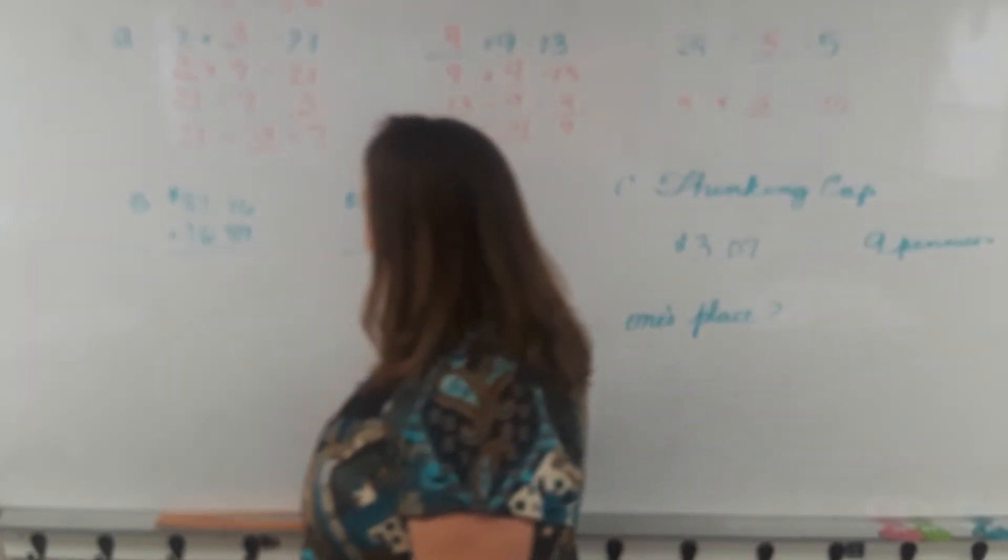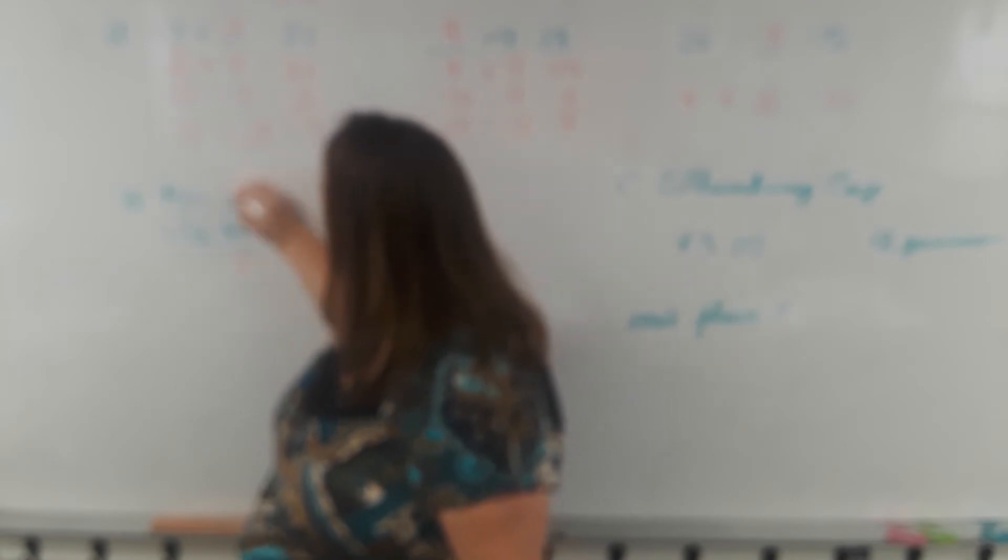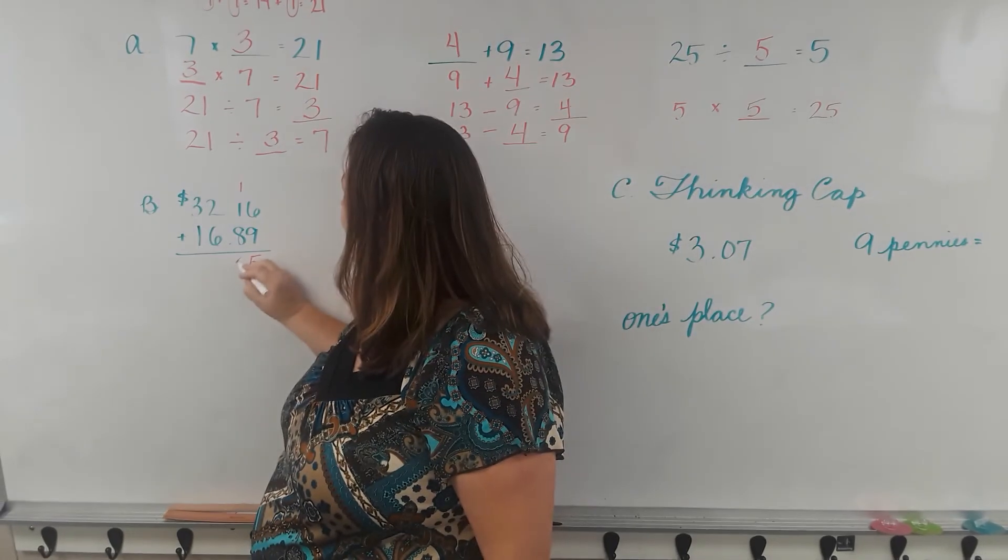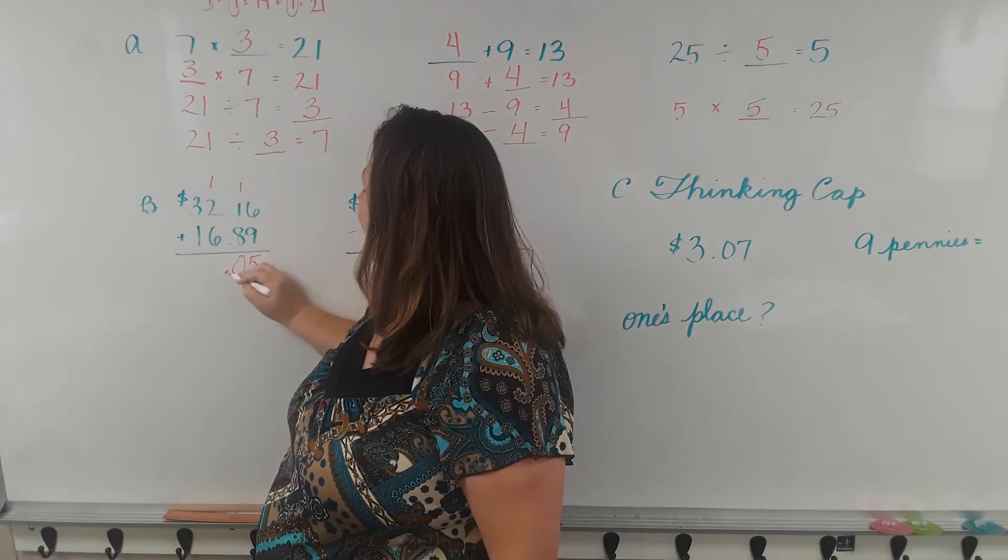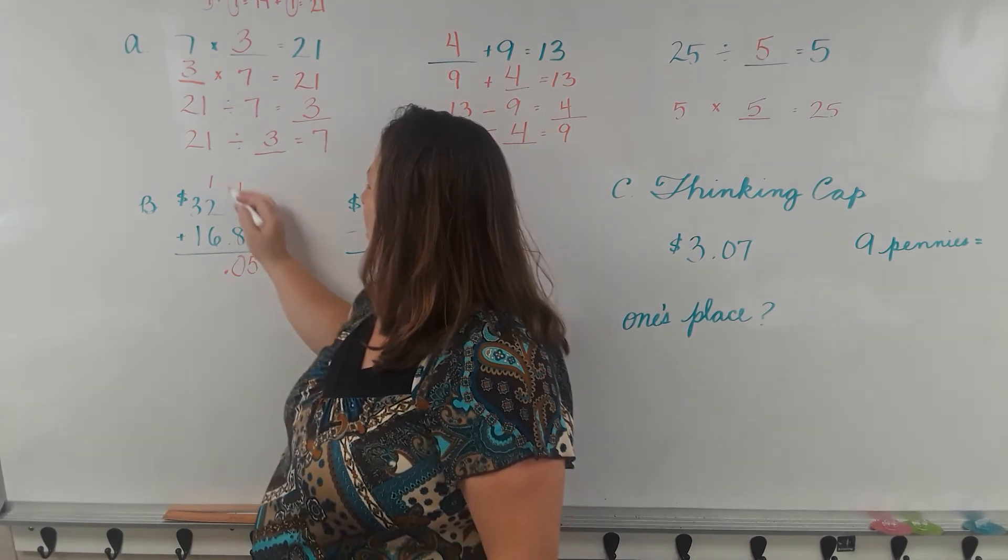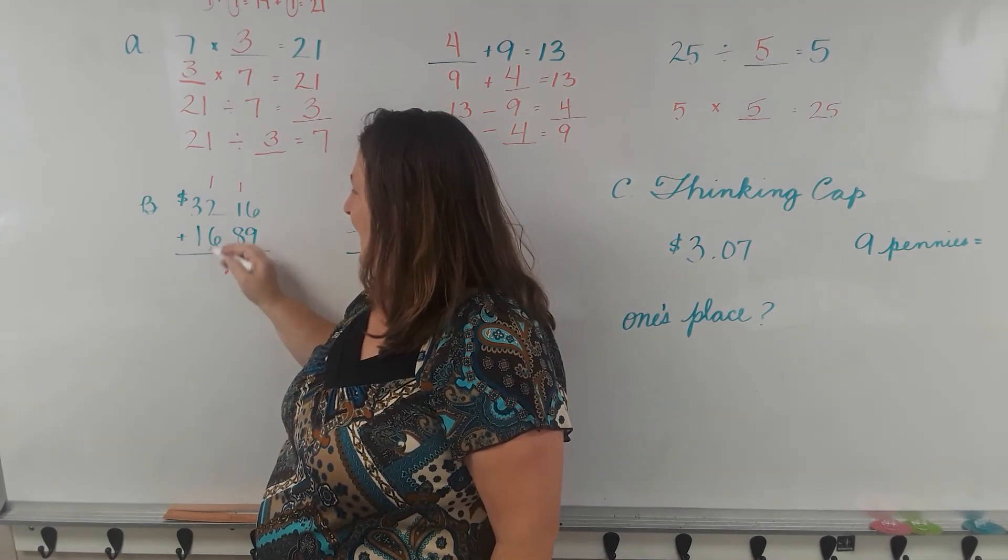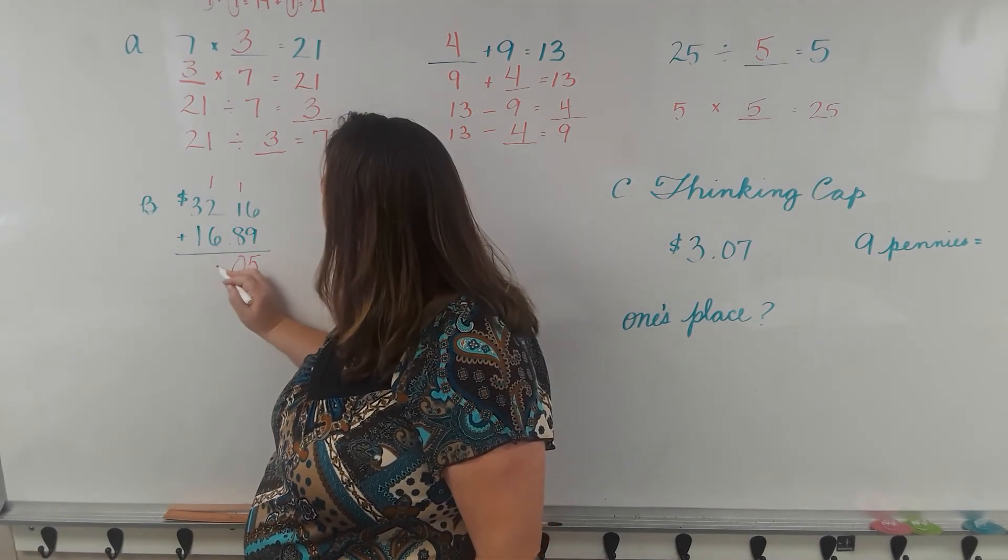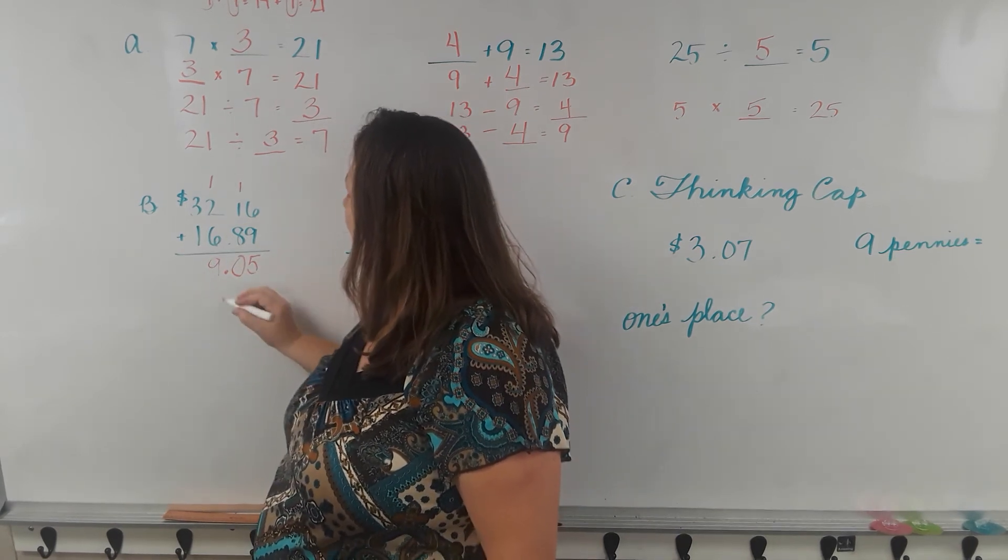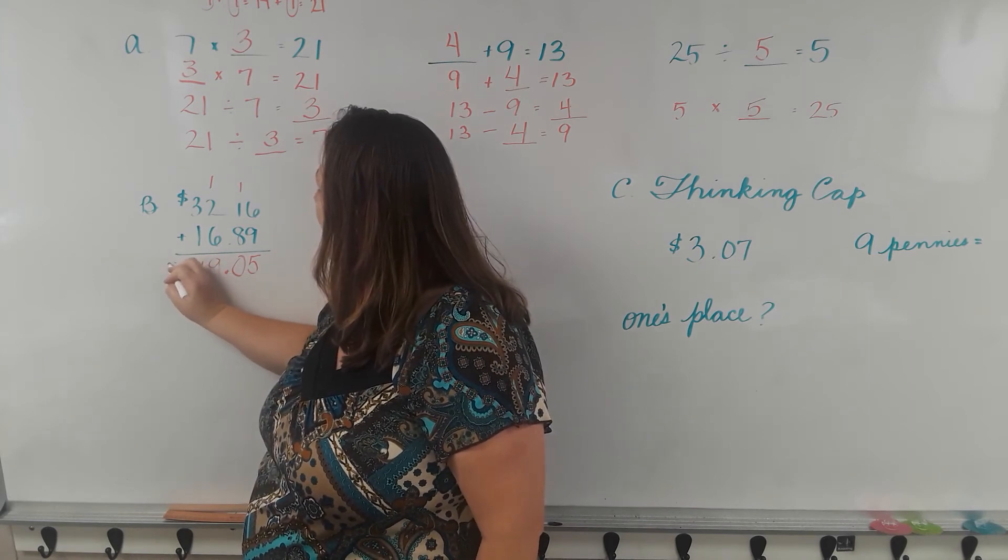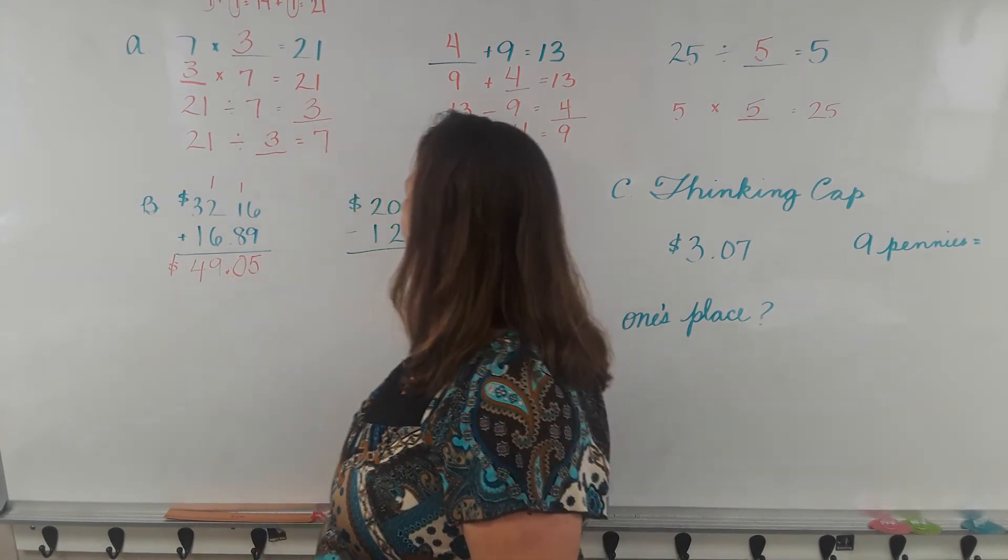Let's add this money. 6 plus 9 equals 15. 1, 1 and 8 equals 10. Don't forget that decimal point. 1, 2 and 6 equals 9. 3 and 1 equals 4. $49.05.